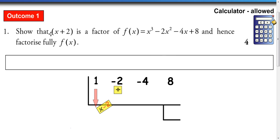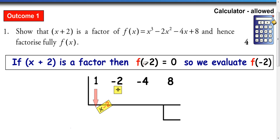Question 1 says show that x plus 2 is a factor of this polynomial and hence fully factorize. So because x plus 2 is a factor of this, that means x equals negative 2 is going to be a root to make the bracket equal to 0. So because f of negative 2 is going to be a root, then we evaluate f of negative 2.